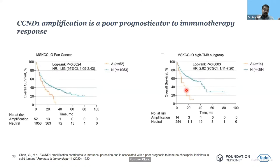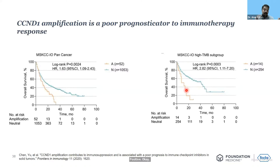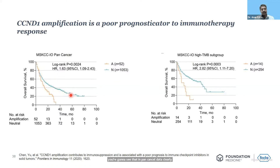Lastly, all refractory patients also had CCND1 amplification, which is a very poor prognosticator of immunotherapy response. If you're going to give frontline ICIs, pan-cancer data clearly suggests that patients with CCND1 amplification have a much poorer overall survival than those who are negative. A subset analysis shows that even in patients with a high tumor mutation burden, CCND1 amplification still leads to a poor response to immune checkpoint inhibitors irrespective of TMB status.